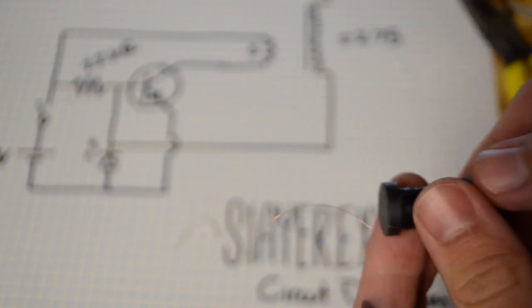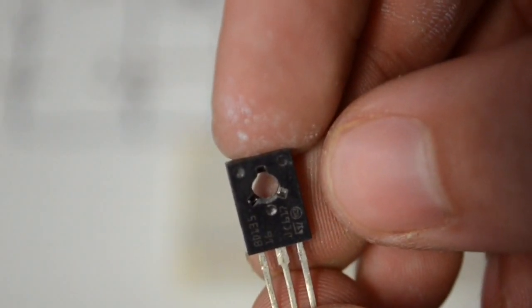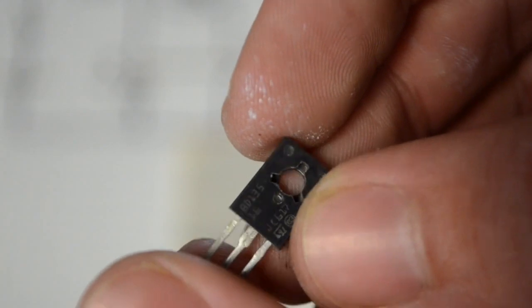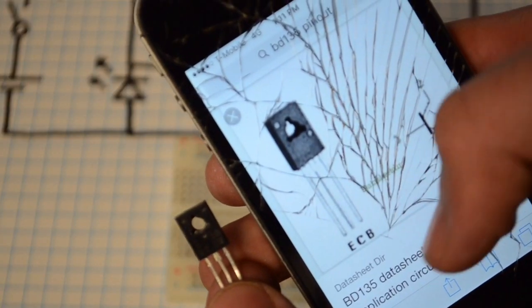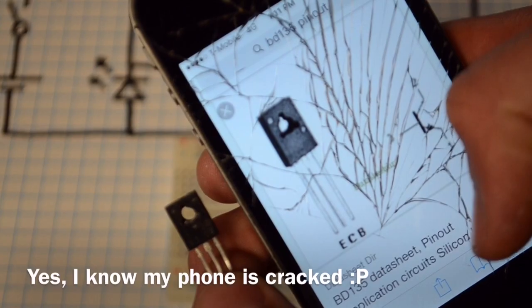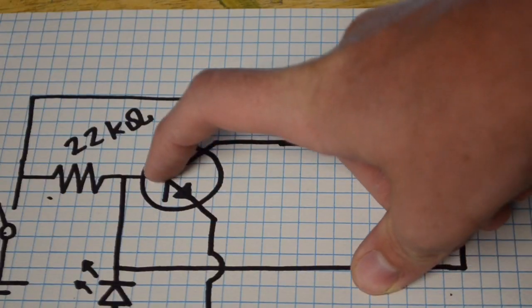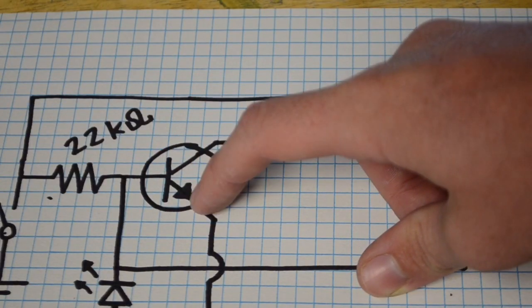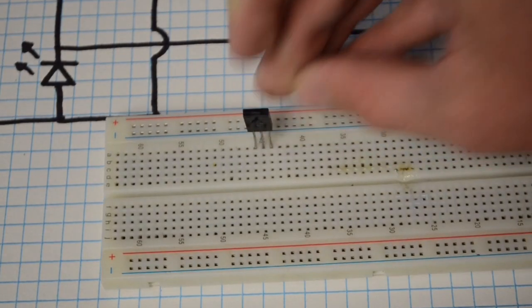For my transistor, I'm going to be using this one. It is a BD-135 transistor that I salvaged out of an old TV. By Googling the part number on my phone, I can see that it goes emitter collector base. Going back to the circuit, this is our base, that's our collector, and this is our emitter. So now I'm going to insert the transistor into these pins here.